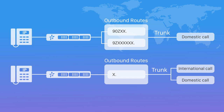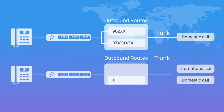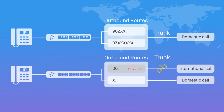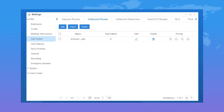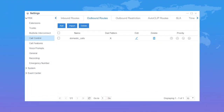Simply setting a general dial pattern which will match all outgoing calls — domestic calls as well as international calls. What we need is creating an invalid SIP trunk route for international calls. Then normal domestic calls will be connected as usual, while any international calls will be dropped.